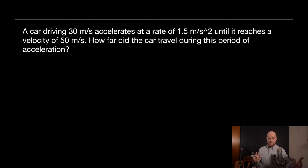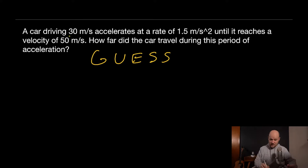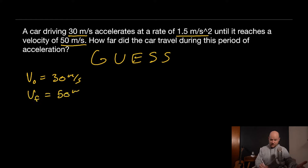Whether or not you know what velocity and acceleration mean, the GUESS method works. Writing out G-U-E-S-S, the first step is Givens: the problem gives us an initial velocity of 30 m/s, an acceleration of 1.5 m/s², and a final velocity of 50 m/s. Those are all our givens.